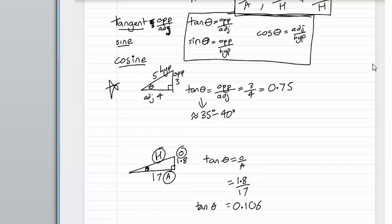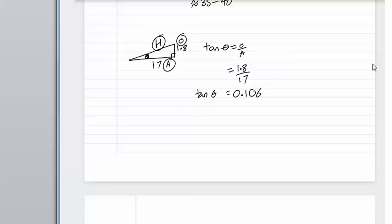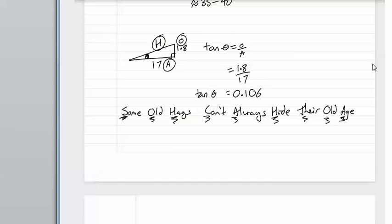And each one is going to be different for every different size of angle in a right angled triangle. To learn these angles, there's a little rhyme that a lot of people will teach you. And it's some old hags can't always hide their old age. And that stands for sine of the angle is opposite over hypotenuse. Cos of the angle is adjacent over hypotenuse. And tan there, tan of the angle is opposite over adjacent. However you remember sine, cos and tan and which sides they are, you do have to remember it.